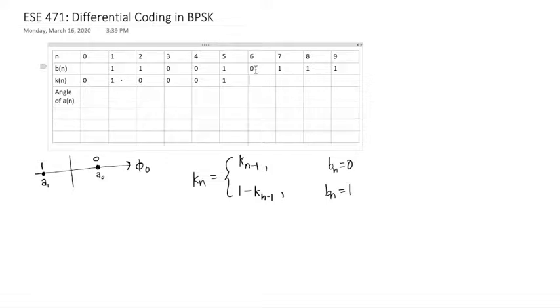Here I want to send at bit six, I want to send a zero, so I send the same thing I did the last time. Bit seven, I want to send a one, so I take the opposite, take the opposite, take the opposite. Okay, so now my encoded bitstream is this.